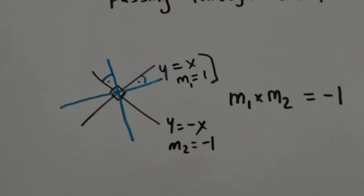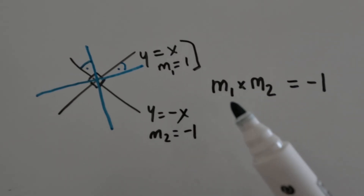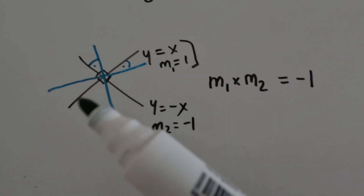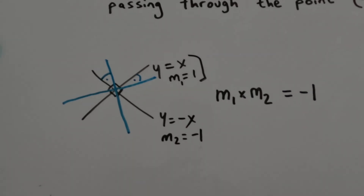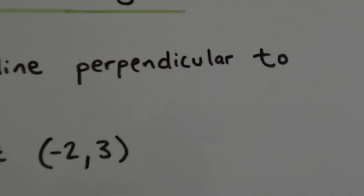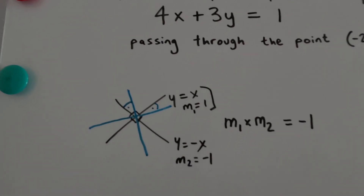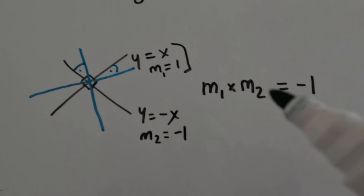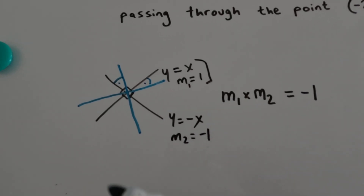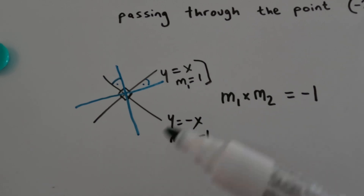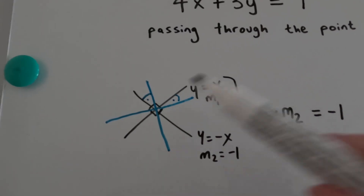A fundamental principle that most of you should know and will need to answer the question is that the product of the gradients of perpendicular lines — perpendicular means at right angles — so the product m1 times m2 equals minus 1. This is always the case regardless of whatever m1, m2, y or x we choose; you can pick any lines you like.